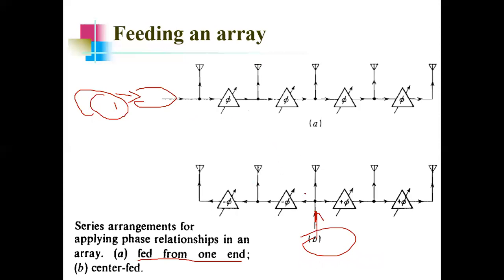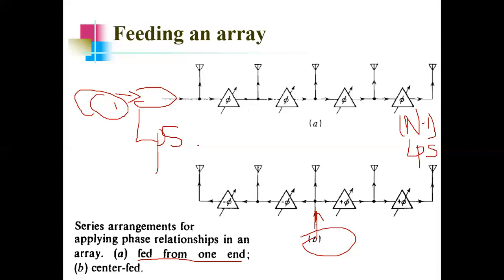The disadvantage of the series feed network is that if the loss in one network element is L_PS, the loss in the entire array network becomes (n−1) × L_PS, multiplied by the number of antenna elements, which is very large. This is a significant disadvantage and is usually unacceptable. Based on your needs you should choose between a parallel feed network or a series feed network. That was about beam steering, feeding, and the different types of feeds.